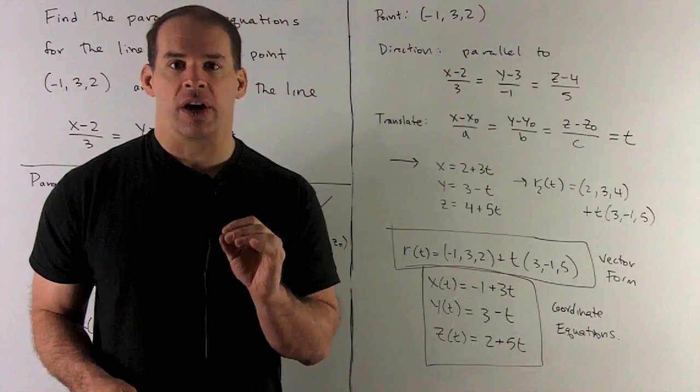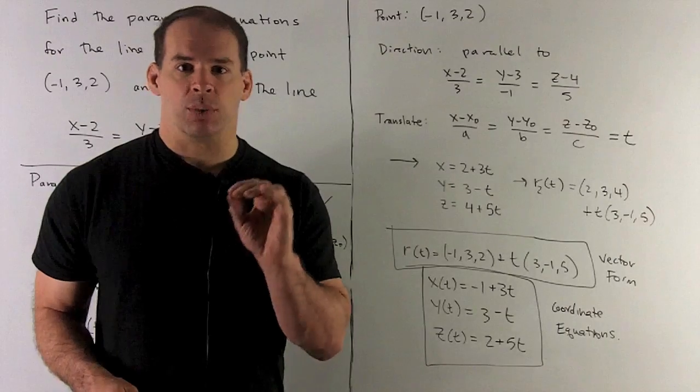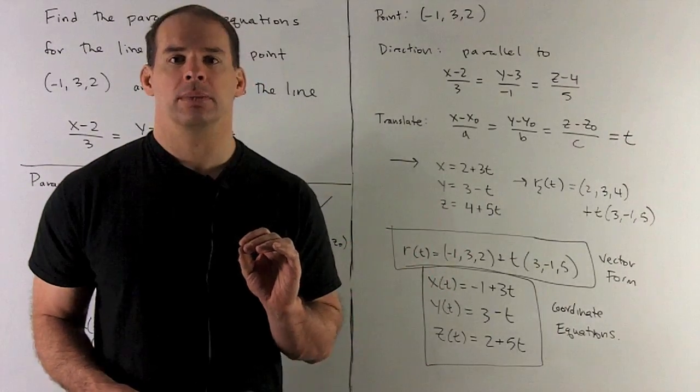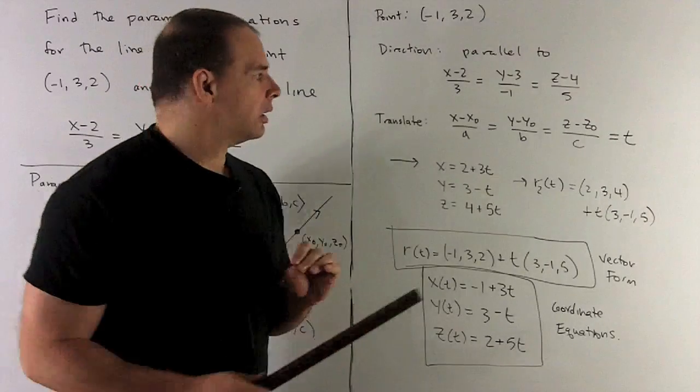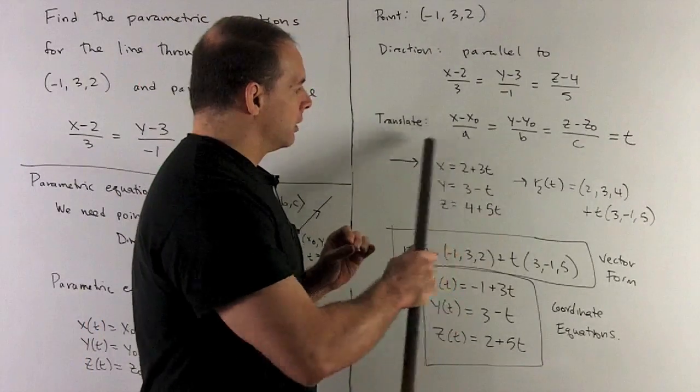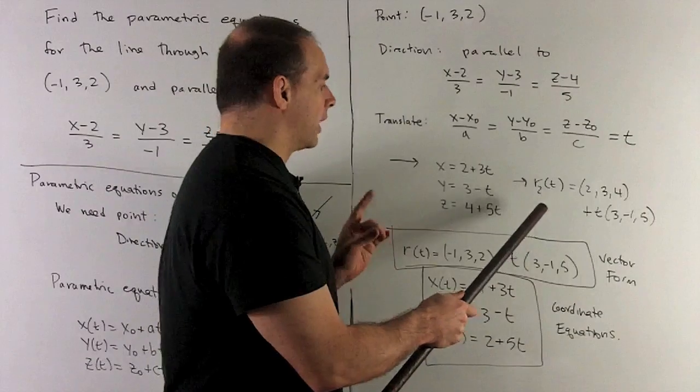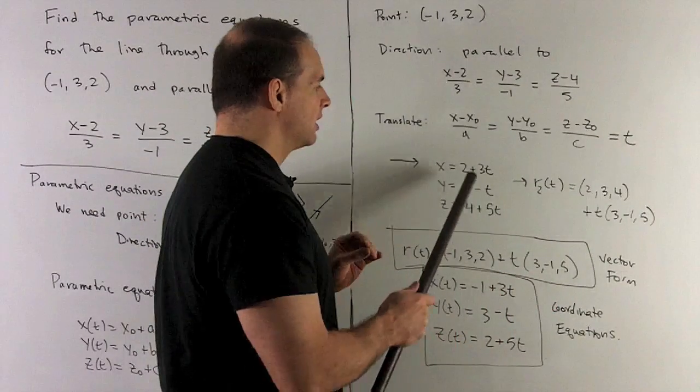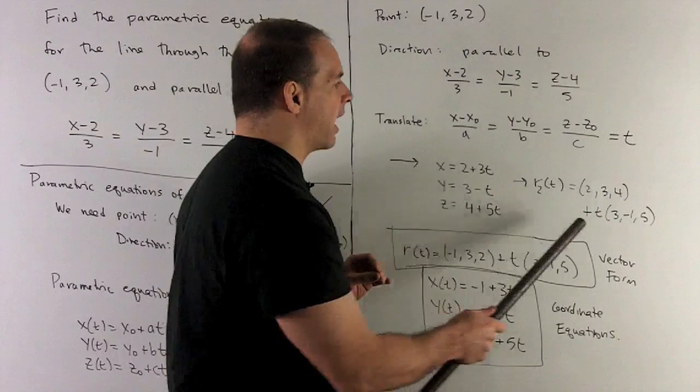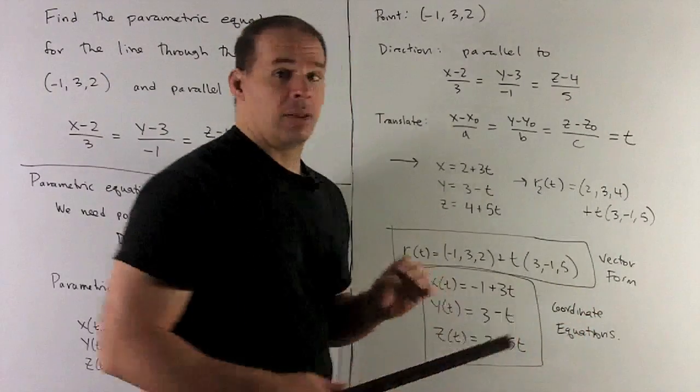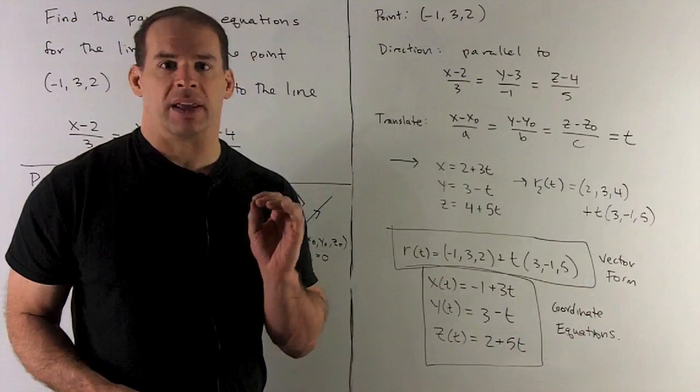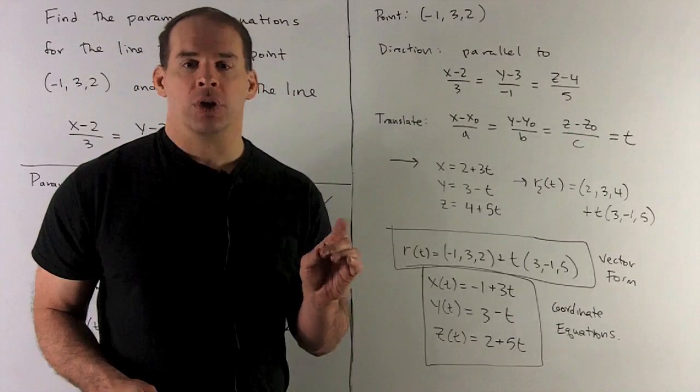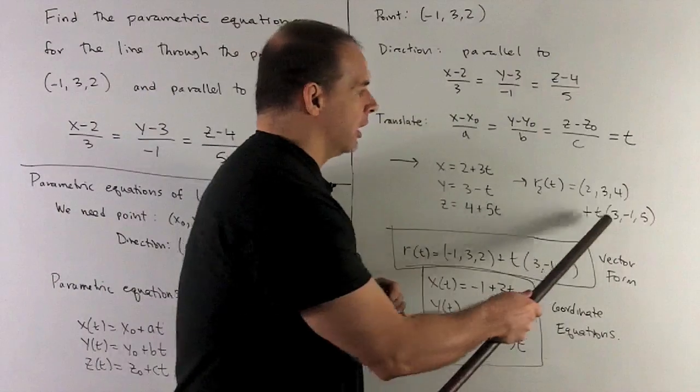If the symmetric equations are degenerate, say we had just x equals 3 off to the side, you don't set that equal to t, you just leave it alone. Taking these equations and putting them in vector form gives (2, 3, 4) as your point, plus t times (3, -1, 5). If you had degenerate x equals 3, you'd wind up with a 0 in your first entry.